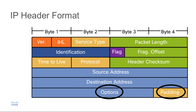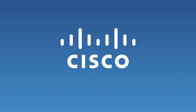These two fields are followed by the options and padding fields. This is a field that varies in length from 0 to some multiple of 32 bits. If the option values are not a multiple of 32 bits, we pad that with zeros to ensure that the header meets the minimum 20-byte size.